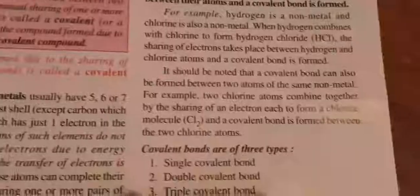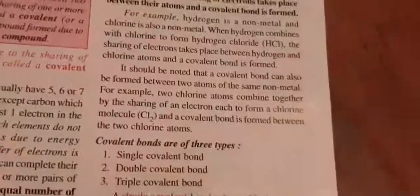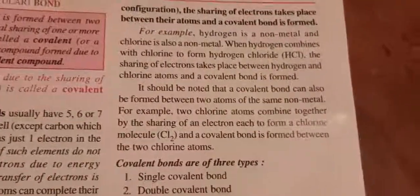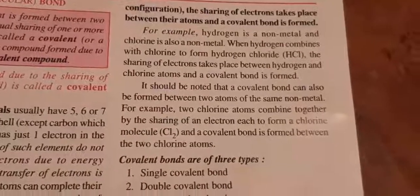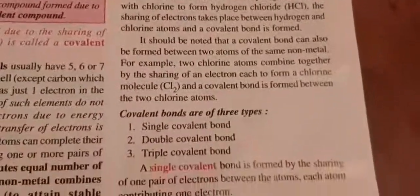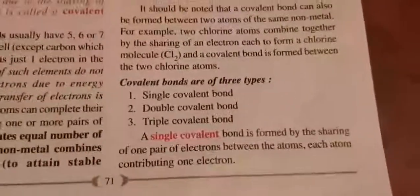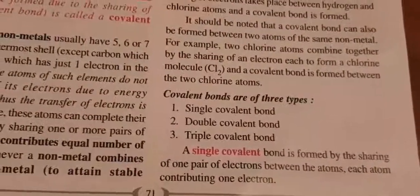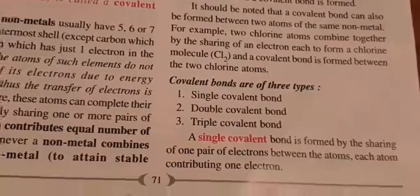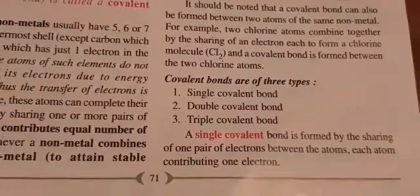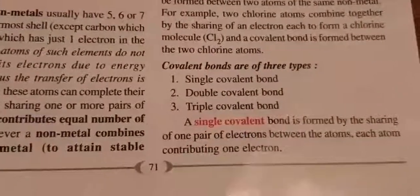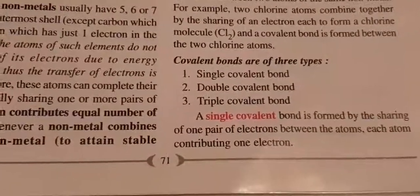So in covalent bonds, there are three types of covalent bonds formed. If between two atoms one electron each is given for sharing, a single bond is formed. If both the atoms are providing two electrons each for sharing, then it results in the formation of a double bond. If they are providing three electrons each, then it results in the formation of a triple bond.